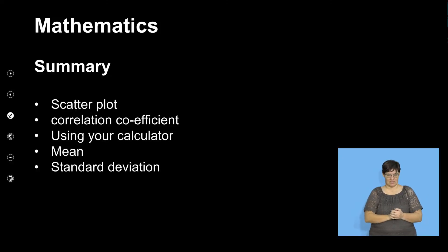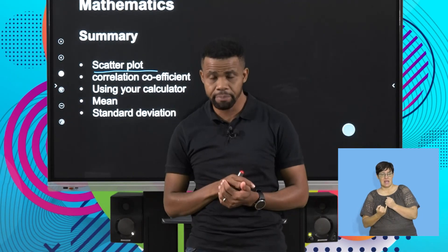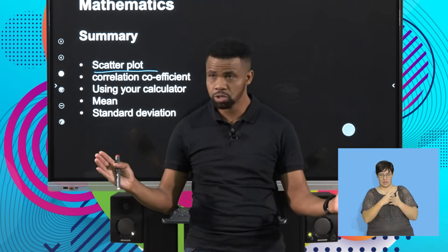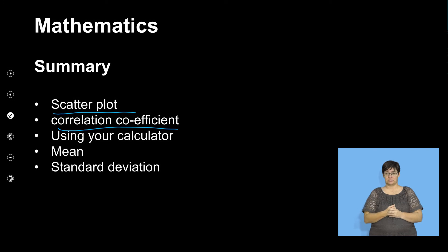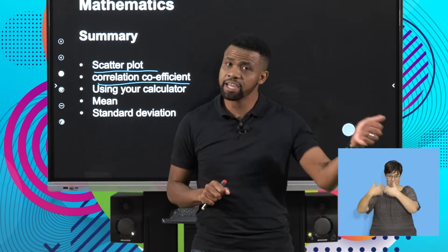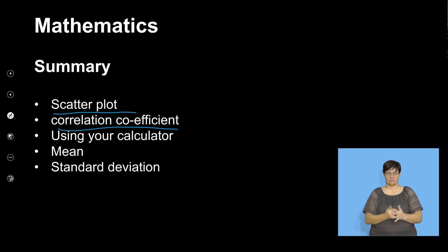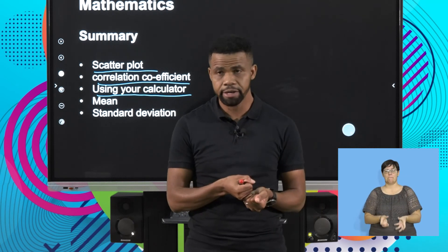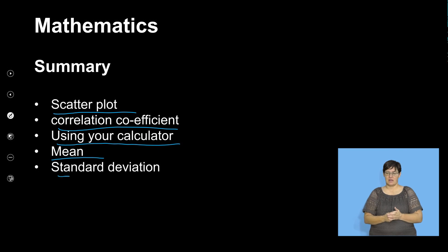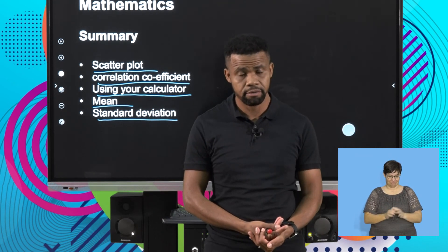Let's look at our summary of what we've looked at. We looked at the scatterplot — our scatter plot is drawing all the points, the x and y, the independent and dependent variable. The correlation coefficient is between negative 1 and 1, where 1 is strong positive correlation, negative 1 is strong negative correlation, and 0 is no correlation. And we can calculate the correlation coefficient using a calculator. We've also looked at mean and standard deviation in the context of how to calculate the correlation coefficient without a calculator.